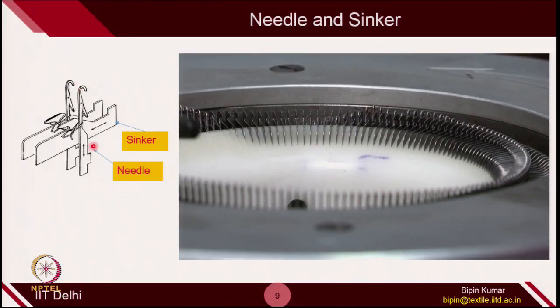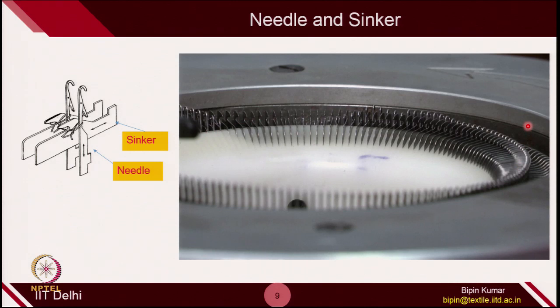Now let's look at needle-sinker movements. You can see in the schematic that each needle is placed between two sinker elements. In the photo also, these are the sinker elements, and between each sinker element one needle is projected upward. If you enlarge that part, you can see that needles are placed along the circumference in a vertical trick, and sinkers are placed along radial directions. Between two sinkers, one needle is projected upward.